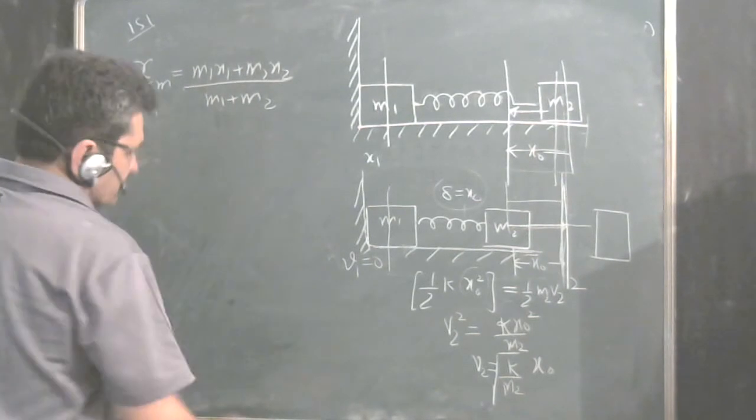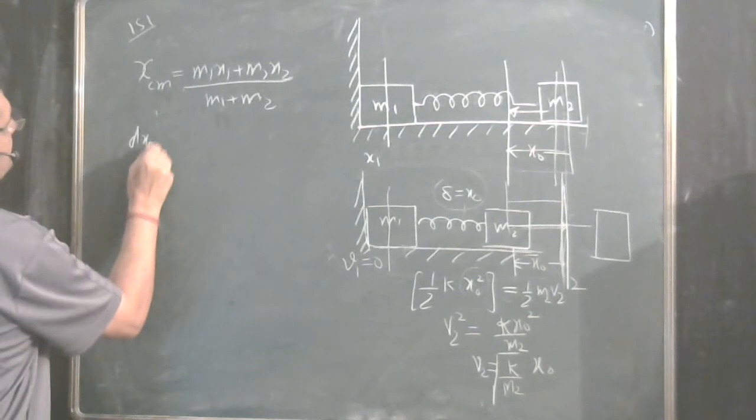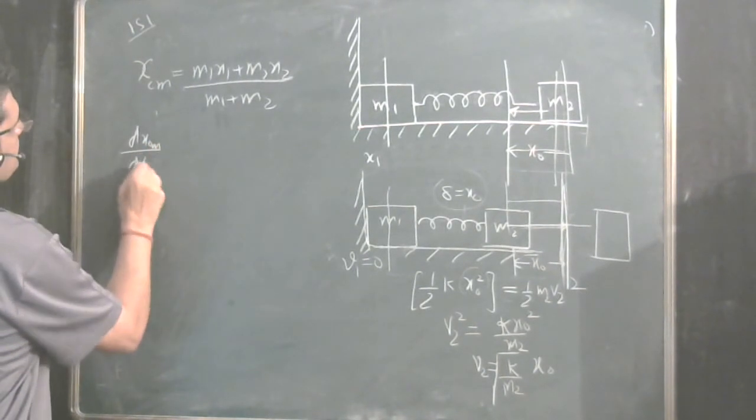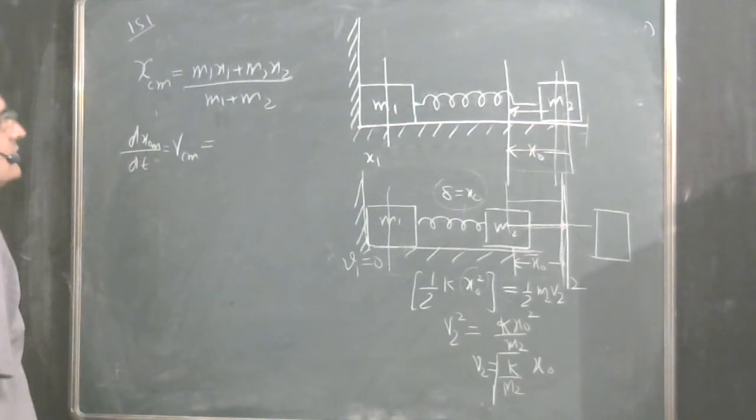Now what is the velocity of this center of mass? Differentiate it. D x center of mass upon dt is the velocity of center of mass would be equal to how much?